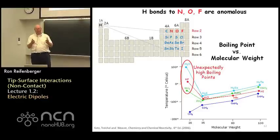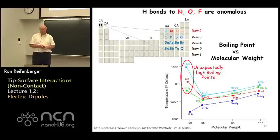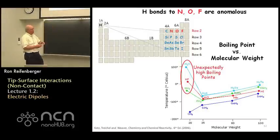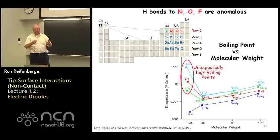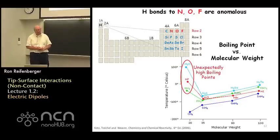It's not just oxygen — nitrogen and fluorine are also anomalous in the same way. The equivalent plot of boiling temperature versus molecular weight for compounds of nitrogen, oxygen, and fluorine shows that their boiling points are anomalously high, indicating that hydrogen bonded to nitrogen, hydrogen bonded to oxygen, and hydrogen bonded to fluorine all have the capability of producing these anomalous hydrogen bonds.